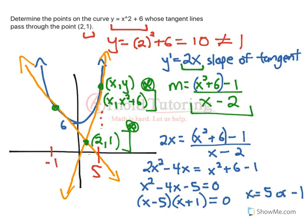So it says determine the points, so the last thing I'll do is plug in 5 and negative 1 back to my original, and I'll get (5, 31) since 5 squared is 25 plus 6 is 31. Or negative 1 squared is 1 plus 6 is 7. So these are the two points where that can happen.